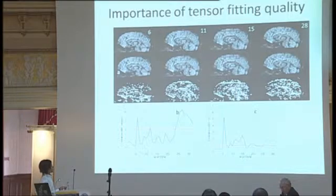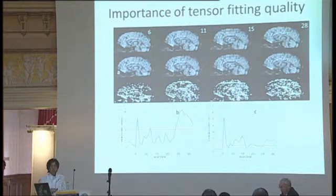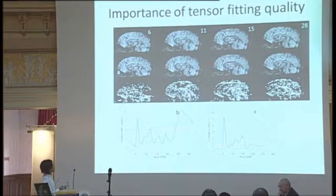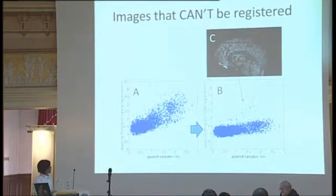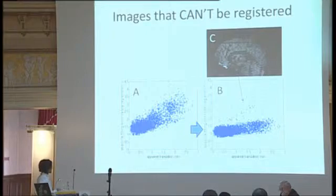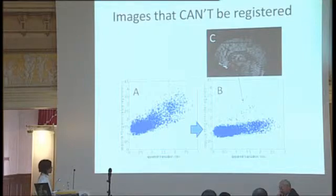So if you blindly do motion correction and eddy current correction without looking at the image, you wouldn't notice it. This is a histogram of a dataset — the amount of translation versus fitting quality. We can expect that if the amount of motion is large, fitting quality to the tensor degrades.